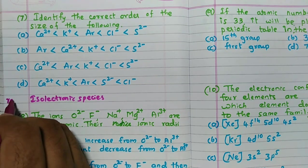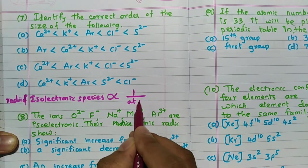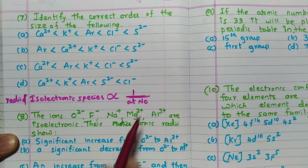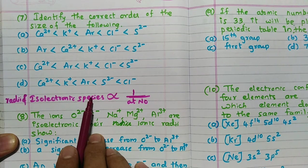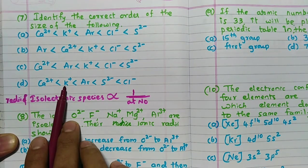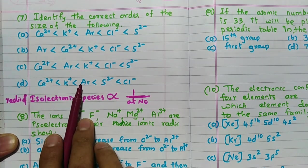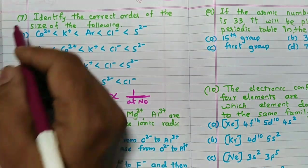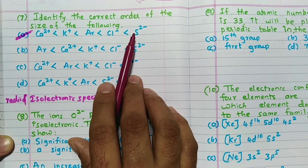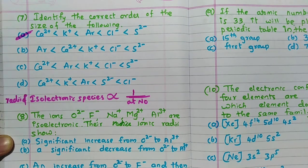One very important rule: for isoelectronic species, radii are inversely proportional to atomic number. If atomic number is more, radius is less — this applies only to isoelectronic species. Calcium has the highest atomic number, so it has the least radius. After calcium comes potassium, then argon, then Cl⁻. The largest radius belongs to S²⁻ because sulfur has atomic number 16, giving the least effective nuclear charge and therefore the maximum radius. So the answer is A.